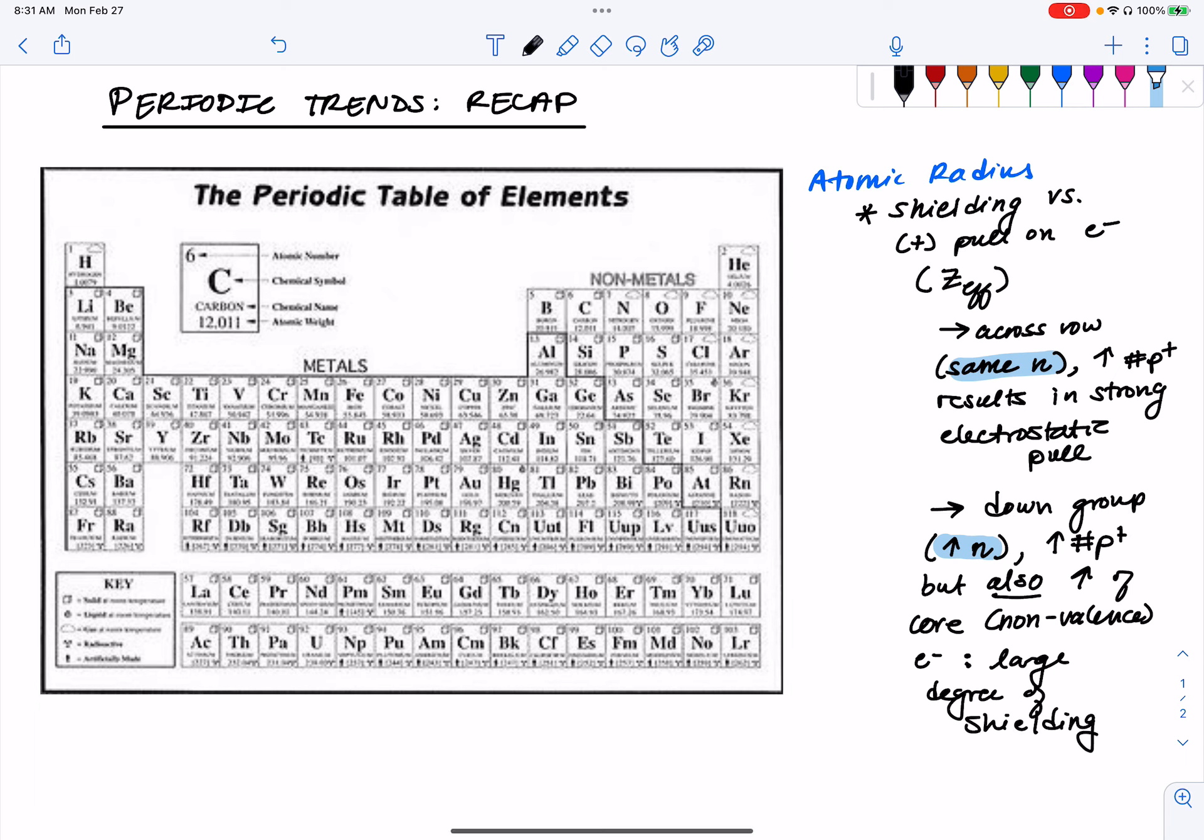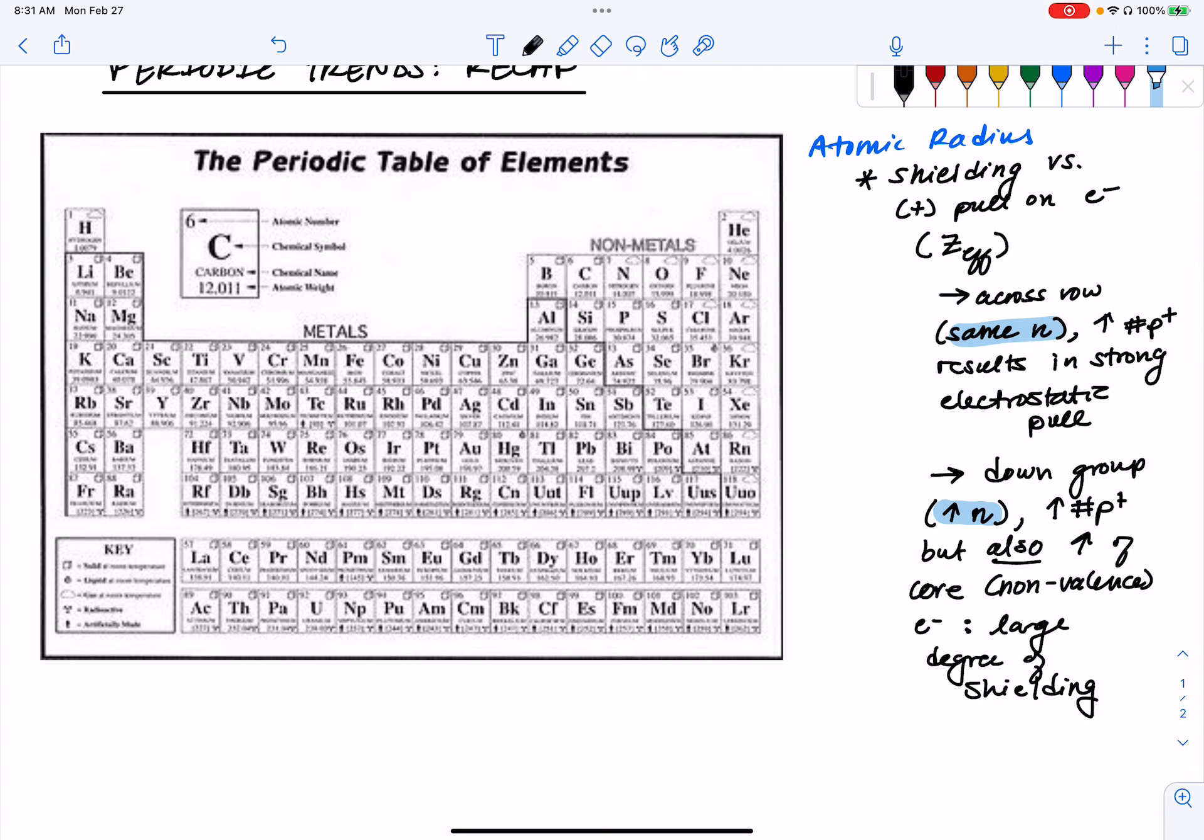So we see a large degree of shielding, meaning our effective nuclear charge is not as strong because our valence electrons have a lot of core electrons between themselves and the nucleus that are kind of making that positive pull from the nucleus not perceived to be as strong.